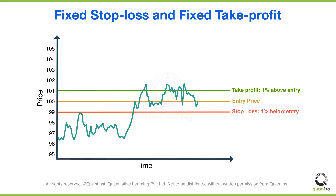This means that as long as the volatility is low, the strategy might be profitable. But as soon as volatility rises, due to the higher fluctuations in prices, it is very likely that our stop loss orders might get triggered.